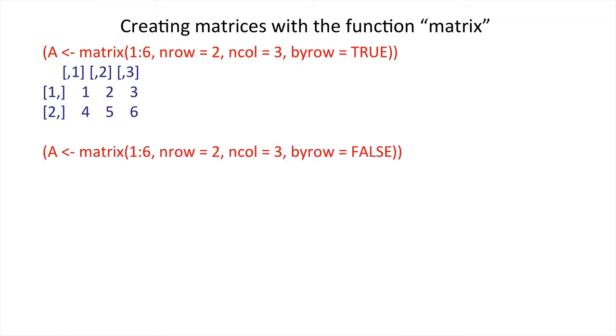However, the alternative is not to fill by row. In this case, what we would get with the same matrices is one, three, five, two, four, six, because we filled by column rather than by row.